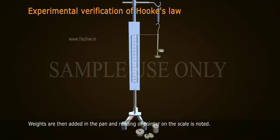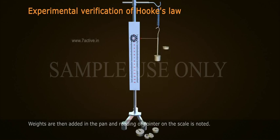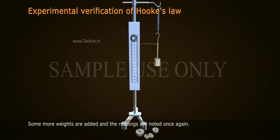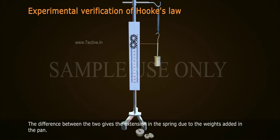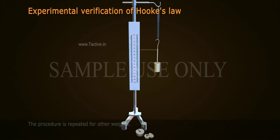Weights are then added in the pan and the reading of the pointer on the scale is noted. Some more weights are added and the readings are noted once again. The difference between the two gives the extension in the spring due to the weights added in the pan. The procedure is repeated for other weights.